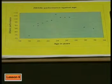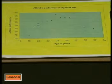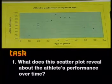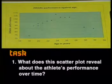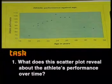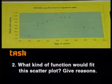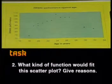Now it's time for your task. Here's a scatter plot of athletic performance against age for athletes. Each point represents the athlete's performance at a particular event plotted against their age at the time of the event. What does this scatter plot reveal about the athlete's performance over time? Describe the changes you see. Also, what kind of function do you think would fit this scatter plot? Give reasons. That's all from this series on data handling — until next time, enjoy your maths.